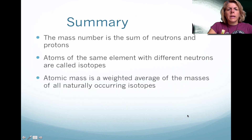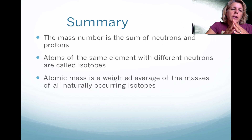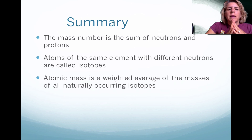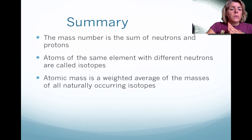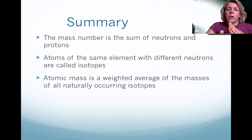Please note that the mass number is the sum of neutrons and protons. Elements from the same element usually have different numbers of neutrons, and those different neutrons determine the isotope. Please also note that the atomic mass is a weighted average of the masses of naturally occurring isotopes.